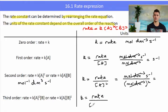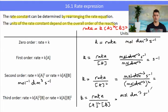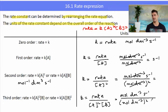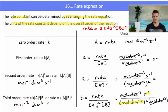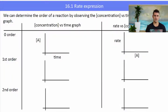For a third order rate equation, it gets a little more complicated. Essentially we have concentration squared multiplied by another concentration, so we divide rate — mole per decimetre cubed s⁻¹ — by concentration cubed. Cancelling one concentration from the top leaves s⁻¹ over mole per decimetre cubed squared. Using index laws, this simplifies to mol⁻² dm⁶ s⁻¹.